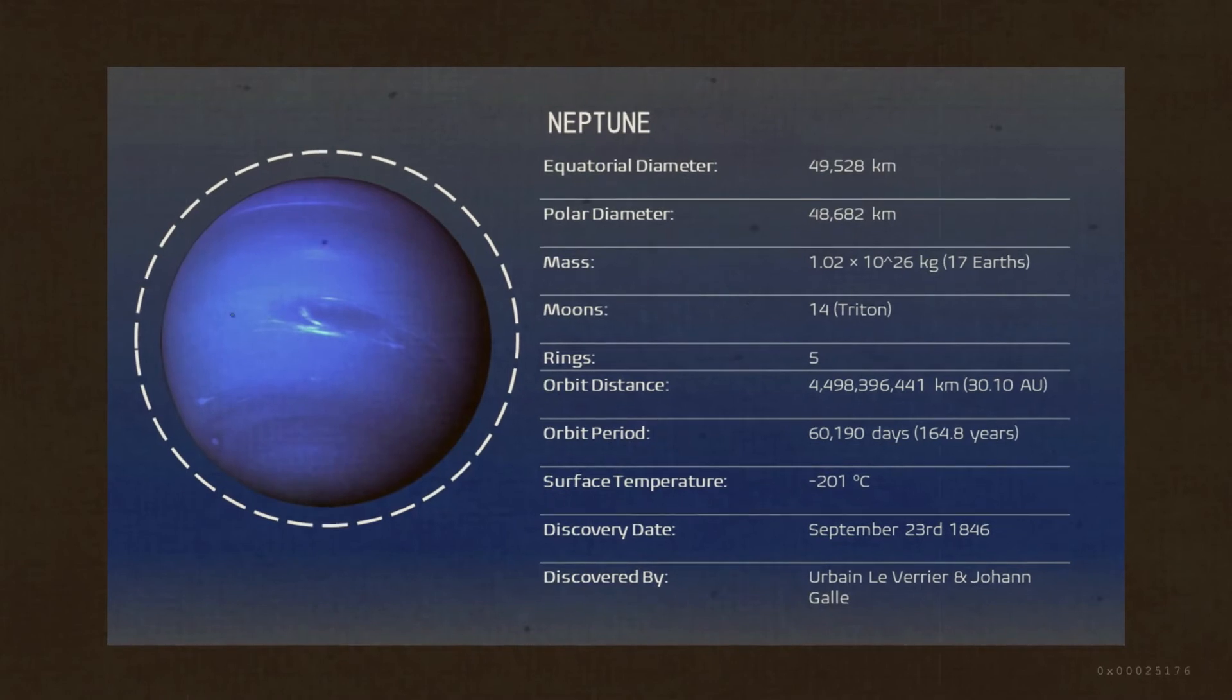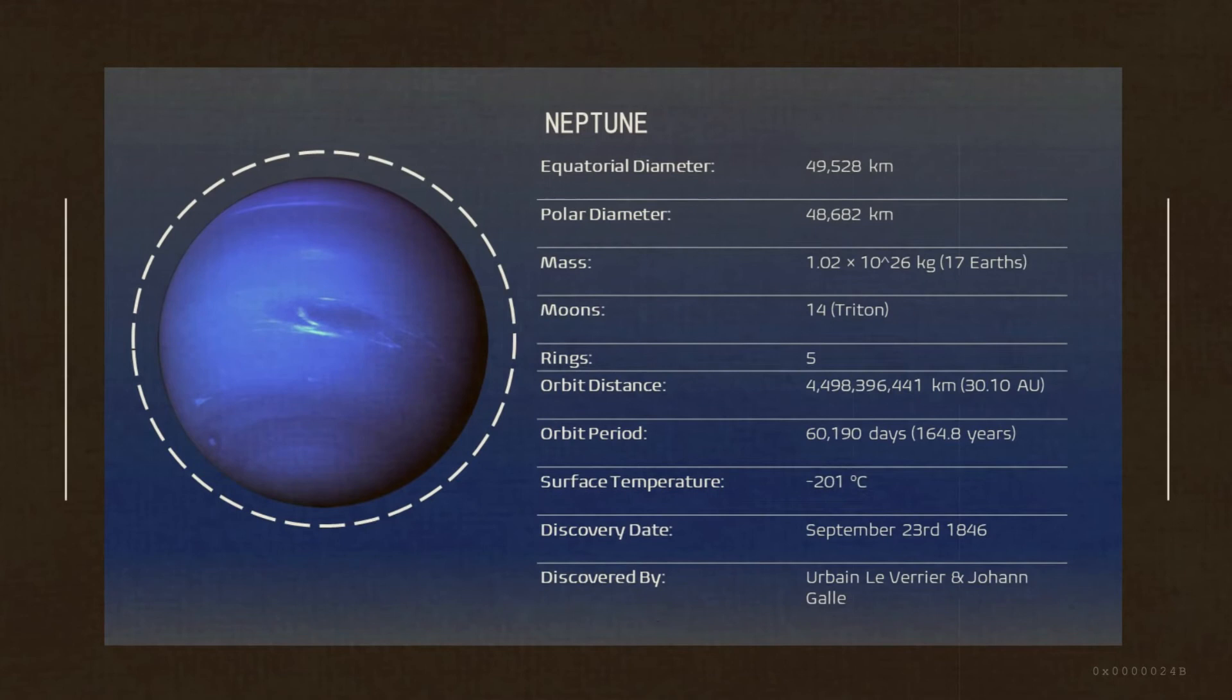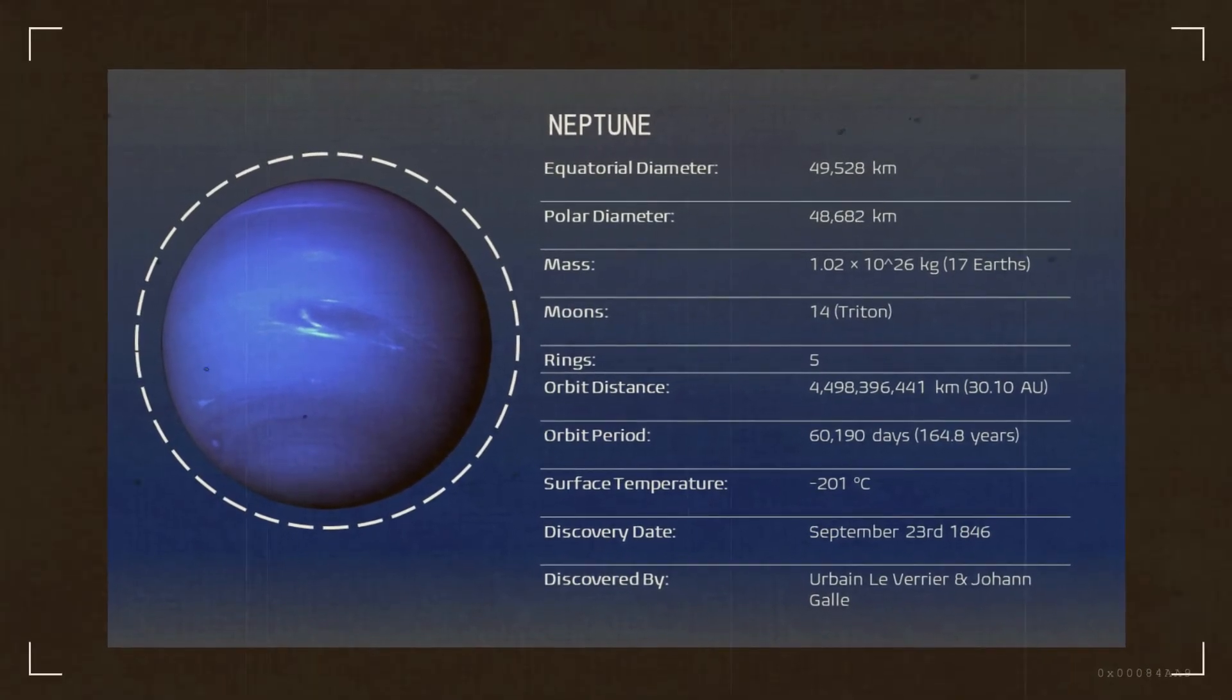Neptune is the most distant planet from the sun. Neptune has a very active climate. Large storms whirl through the upper atmosphere at up to 600 meters per second.